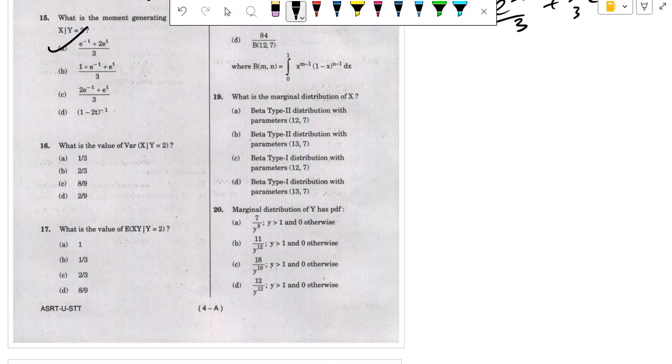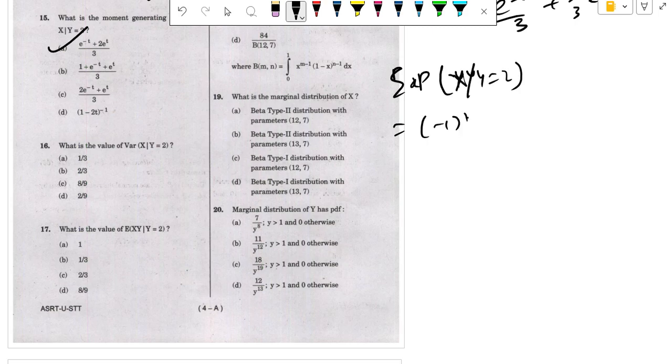Next, what is the value of variance of x given y = 2? This is summation of x times probability of x given y = 2: -1 times 1/3, 1 times 2/3, and adding them gives 1/3.